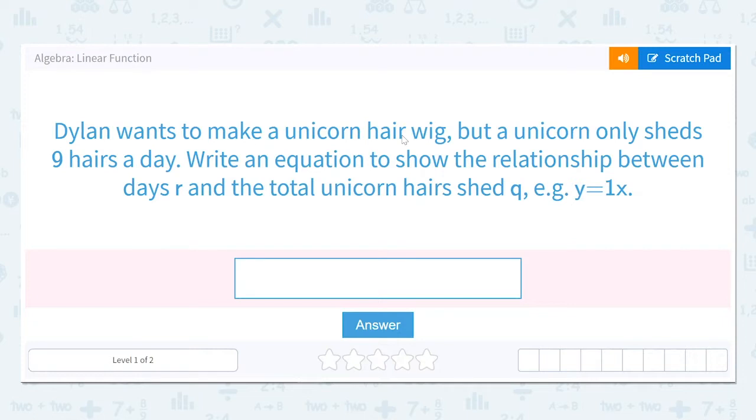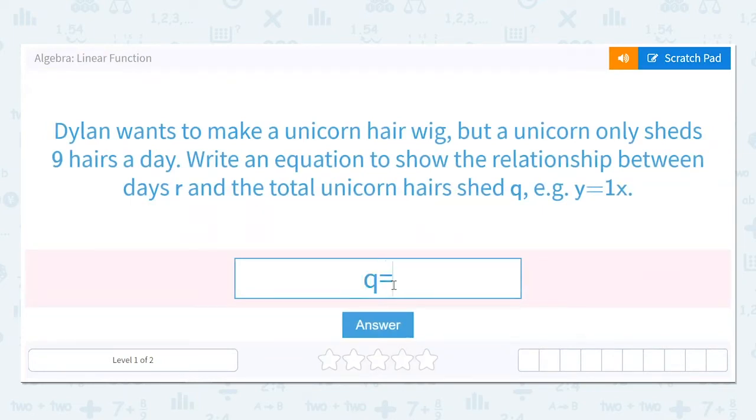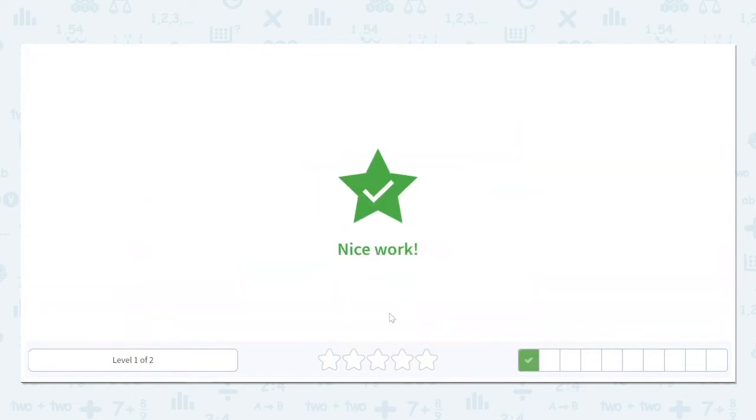In this first question it says, Dylan wants to make a unicorn hair wig, but a unicorn only sheds nine hairs a day. Write an equation to show the relationship between the days R and the total unicorn hairs shed Q. Whenever I start these questions, I always look for the total first. So the total in this case is Q, and I'm going to put that on the left-hand side. Everything else that happens is going to be equal to that total. Other information we have, it gives us nine hairs per day, and the number of days we have is R. So if you shed nine hairs per day for R days, nine times R would give you that total, which they said is represented by Q. So Q equals 9R should be our equation for this first one.